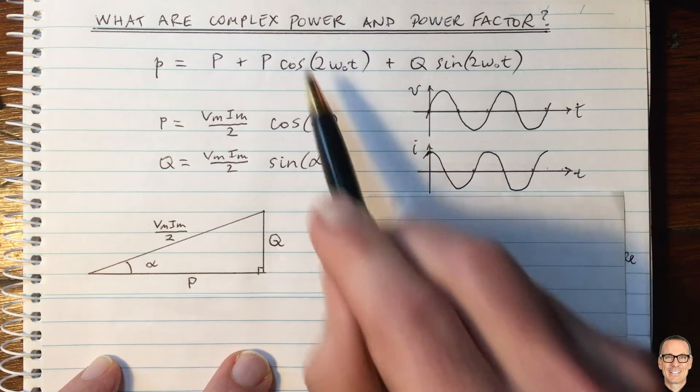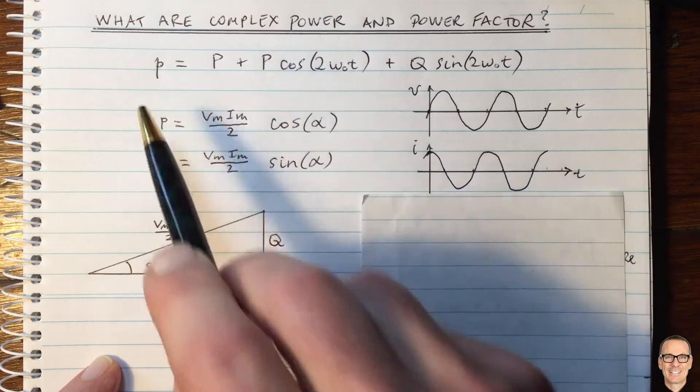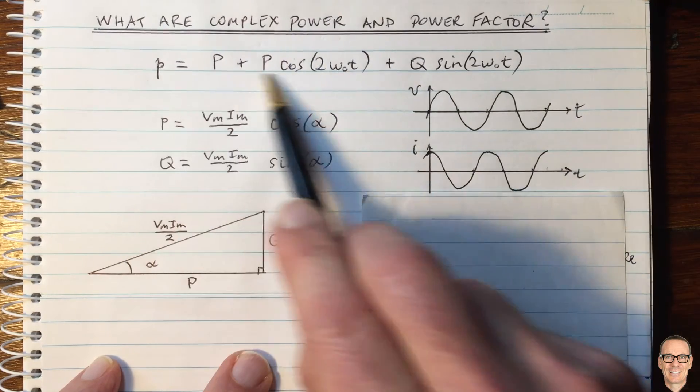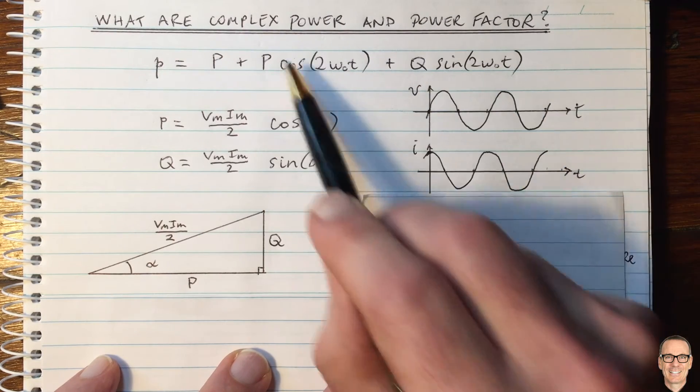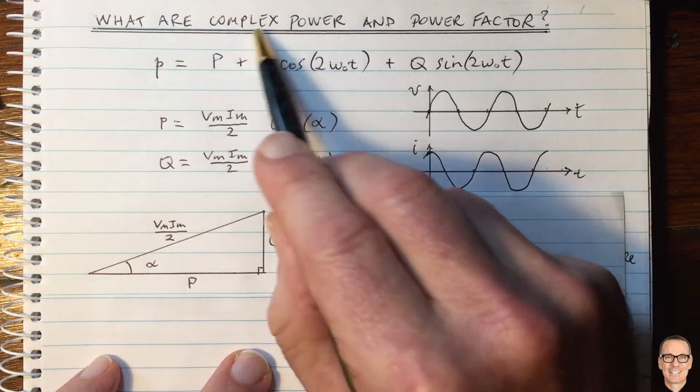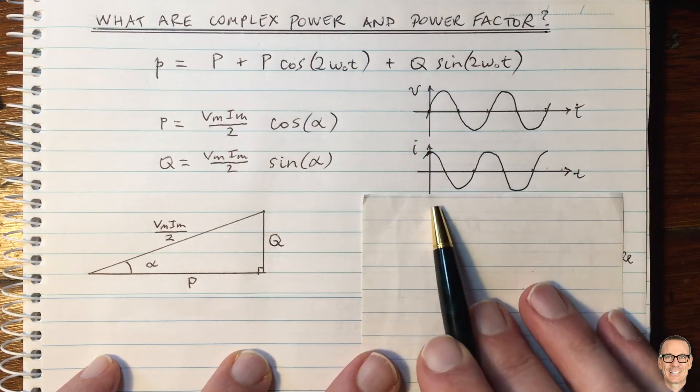Of course, there is no complex power in the real world. This is the power that we have, this is the instantaneous power, this power is real. So I think it's very important not to get confused and to think that there's somehow an imaginary component to the power.